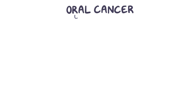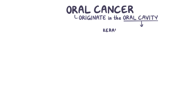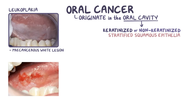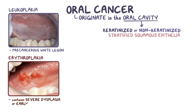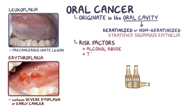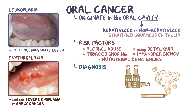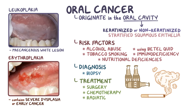As a quick recap: oral cancer refers to cancers that originate in the oral cavity, which is lined by keratinized or non-keratinized stratified squamous epithelia. Leukoplakia is a precancerous white lesion, but more serious lesions include the red-colored erythroplakia, which almost always contains severe dysplasia or early cancer. Risk factors for oral cancer include alcohol abuse, tobacco smoking, and using betel quid, as well as immunodeficiency and nutritional deficiencies. Diagnosis includes a biopsy, while treatment might include surgery, chemotherapy, or radiation therapy.